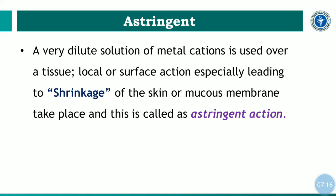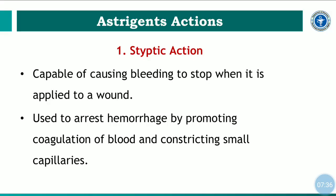There are different types of astringent action. The first is styptic action: astringents have the capability to stop bleeding when applied to a wound. For example, during shaving, if a razor causes a cut on skin, alum is immediately applied because of its styptic action — it is able to stop the bleeding.